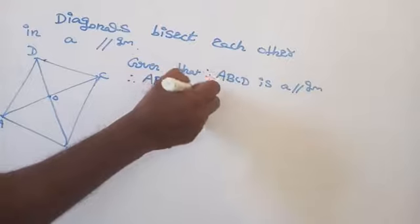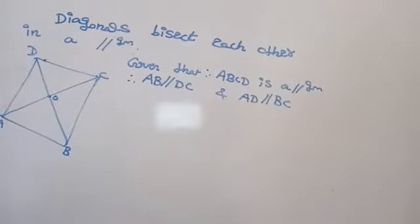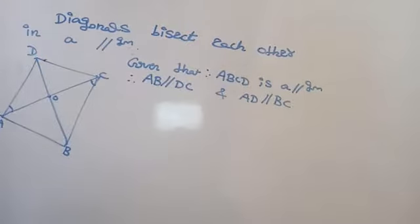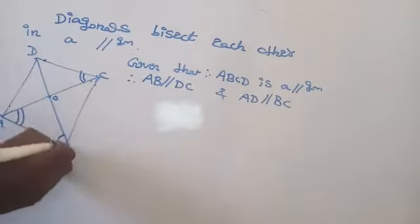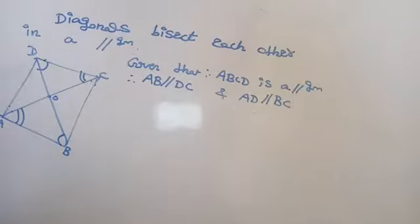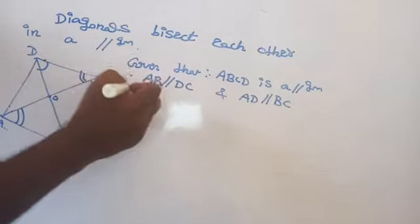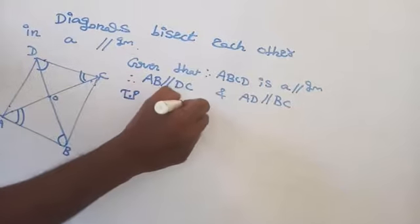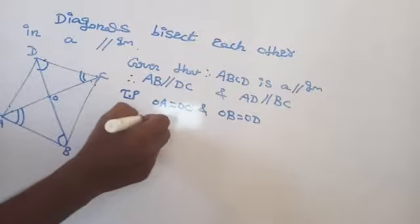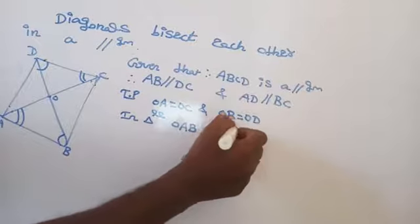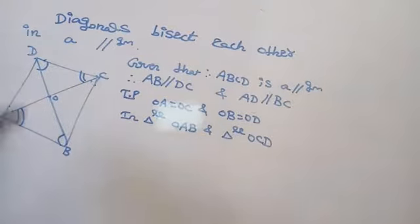Therefore AB is parallel to DC and AD is parallel to BC. This angle equals this angle, and this angle equals this angle. We will consider these two triangles. Here what we are trying to prove is that OA equal to OC and OB equal to OD.